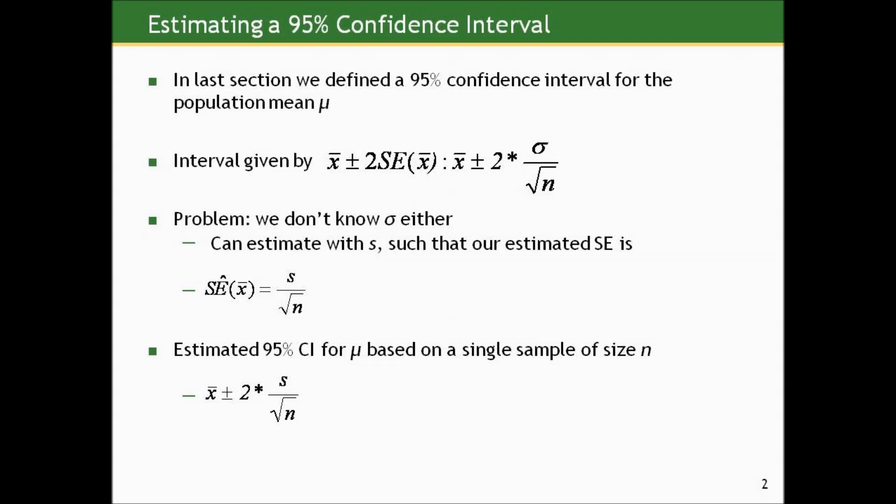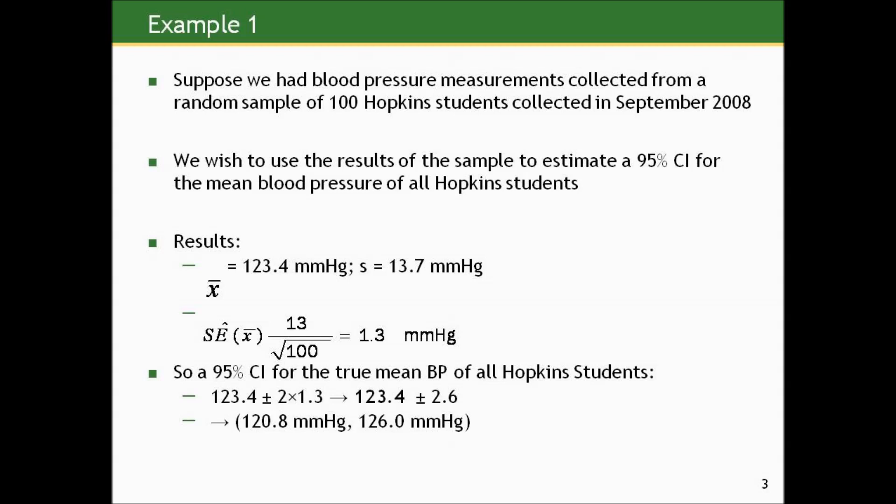We can estimate a 95% confidence interval for the population mean based on a single sample of size n by taking the sample mean and adding and subtracting two estimated standard errors. For example, suppose we had blood pressure measurements from a random sample of 100 Hopkins students collected in September 2008. We get a sample mean of 123.4 mmHg and a sample standard deviation of 13 mmHg. The estimated standard error is 13 divided by the square root of 100, which is 13 over 10, or 1.3 mmHg.